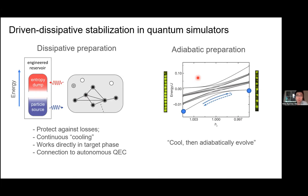What we are showing here is a different, complementary approach for many-body preparation, where the state is protected against intrinsic losses. I've only showed an implementation where the bath adds particles to the many-body system, but in principle you could also engineer a second piece — an entropy dump — another bath that takes out excitations and provides continuous cooling of the many-body state. Our scheme also works directly in the target phase, meaning you do not have to go through the quantum critical region where the gap might be exponentially small. These driven dissipative schemes — bath engineering for analog quantum simulation — are also very intimately connected to ideas of quantum error correction in quantum computing and quantum information processing.